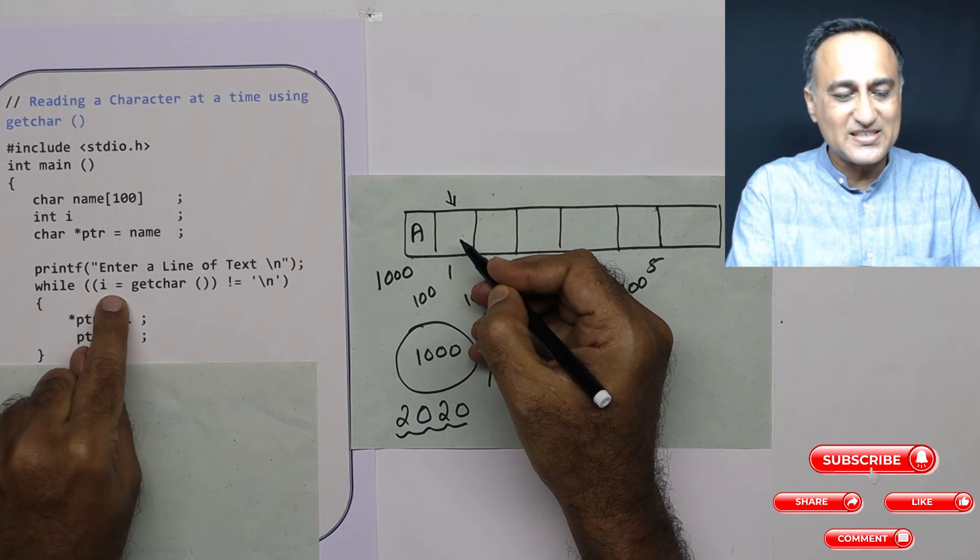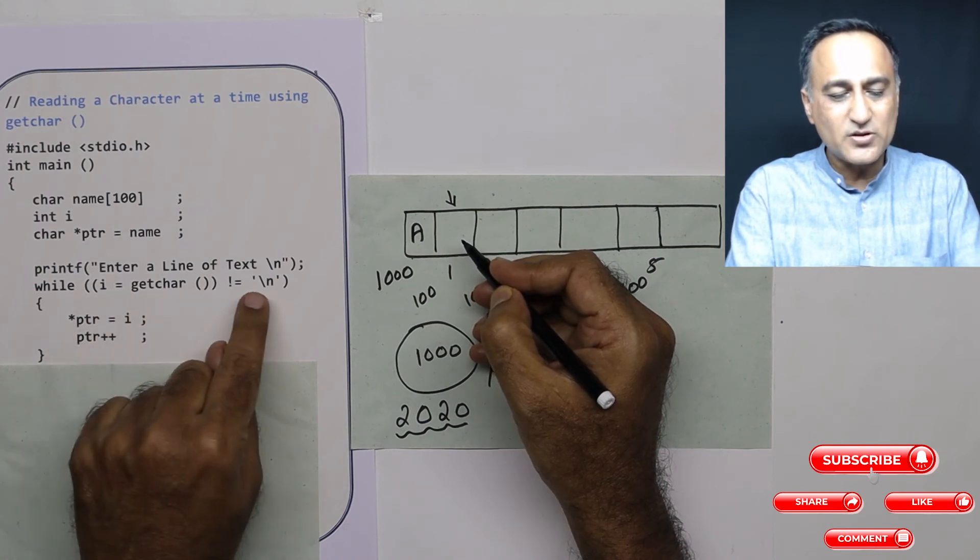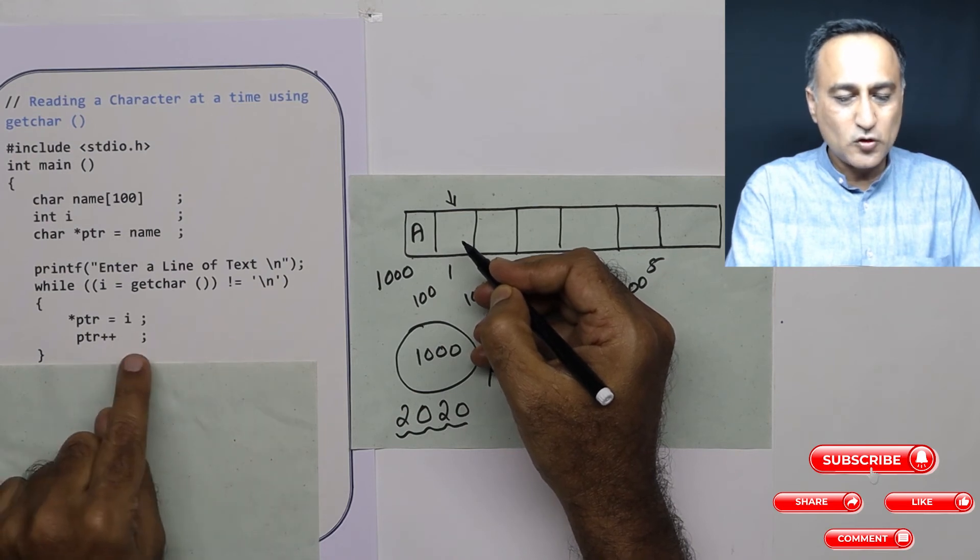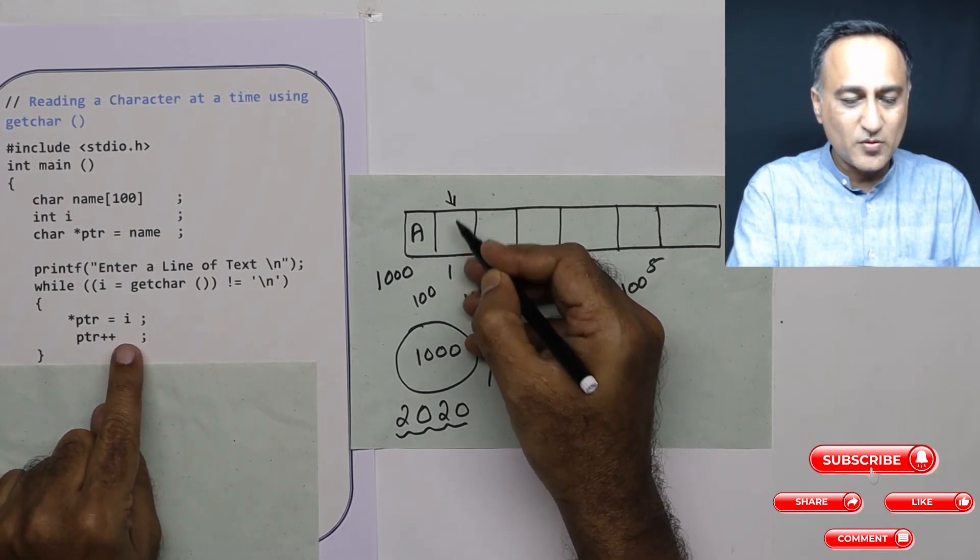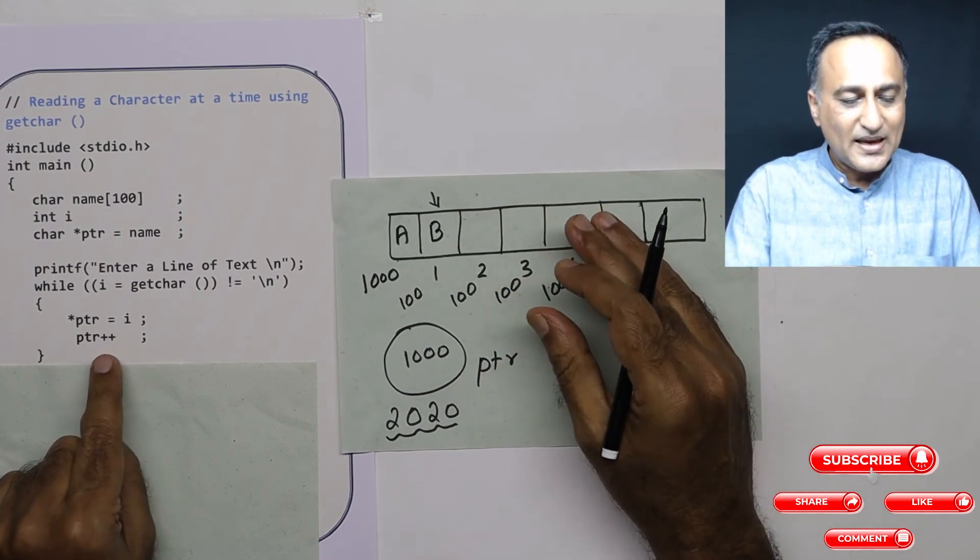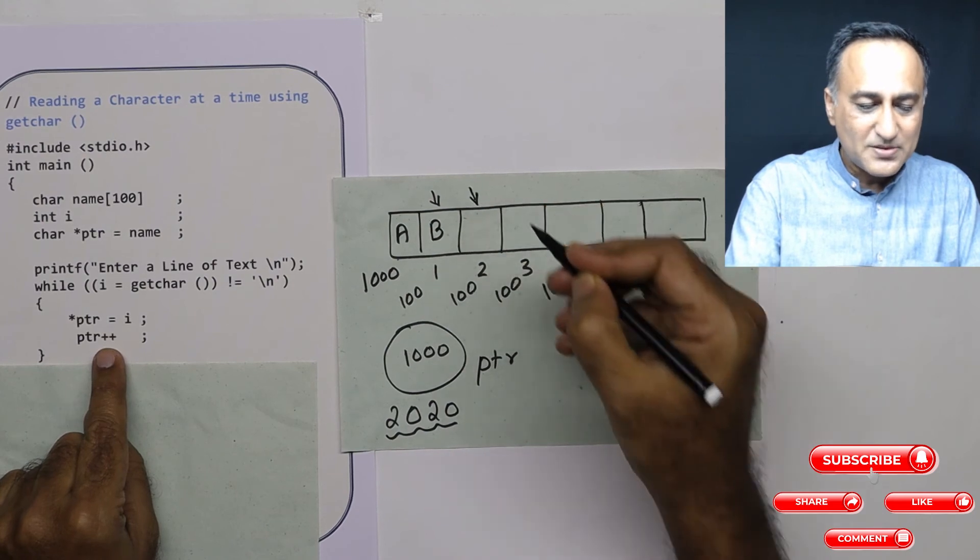The assignment returns 66. 66 ASCII value is compared with the ASCII value of backslash n. It is not the same. So PTR is right now here, capital B is copied here, then PTR is increased and comes here.